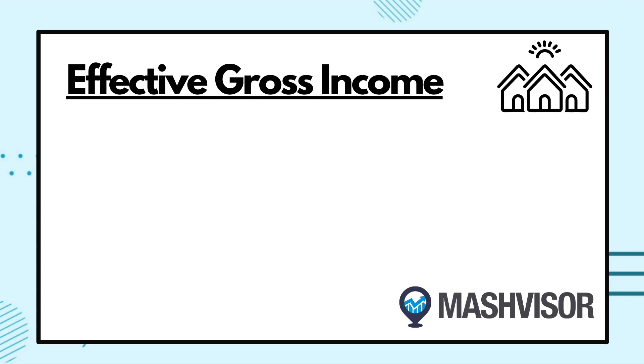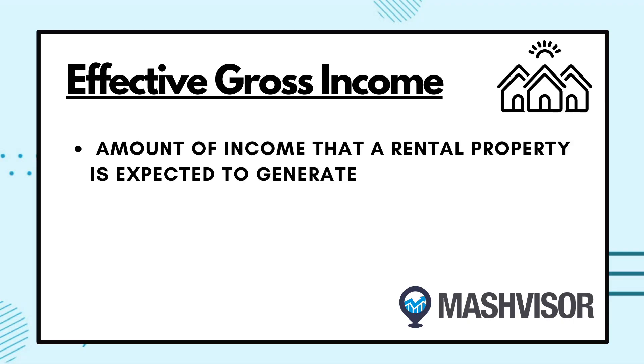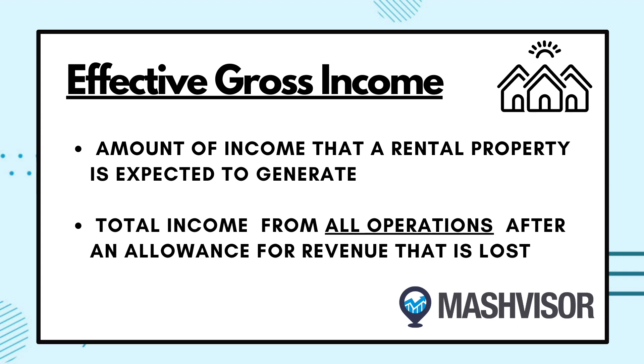What is effective gross income? Effective gross income is the true amount of income that a rental property is expected to generate. It's the total income expected from all operations of the rental property after an allowance is made for the revenue that is lost as a result of vacancy or unpaid rents.